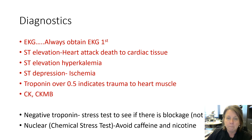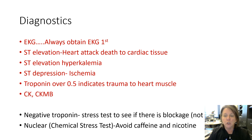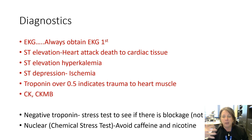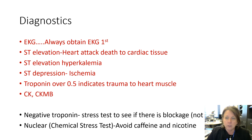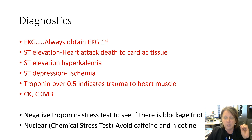ST depression indicates ischemia — if we can intervene before tissue death, blood flow will return. The tissue is damaged but not dead, and needs time to heal. For labs, the preferred test is troponin. A level over 0.5 indicates trauma to the heart muscle, confirming a heart attack and giving the green light to proceed to the cath lab. CK and CK-MB can also be done.